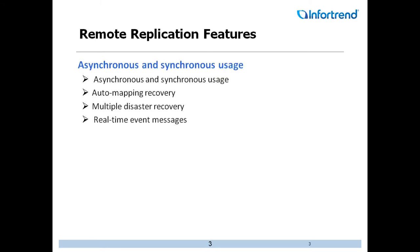Now let's look at the features of InfoTrend EonStore DS Remote Replication. It features asynchronous and synchronous modes, auto mapping recovery, multiple disaster recovery, and real-time event messages.